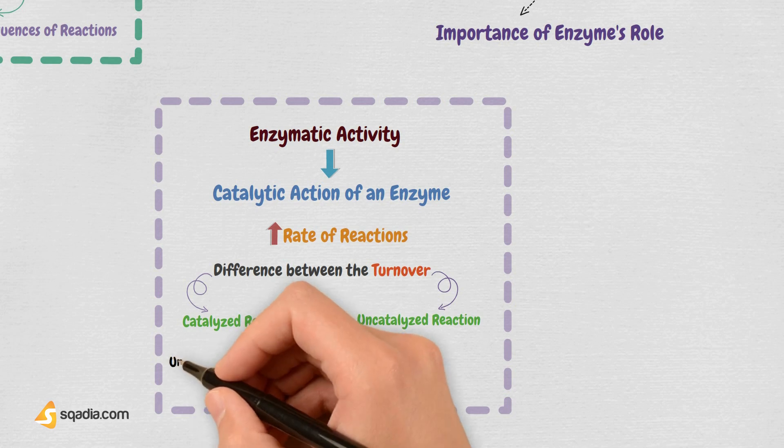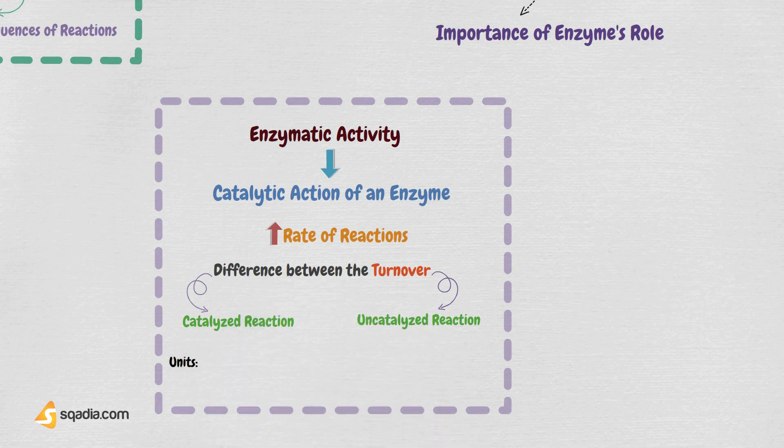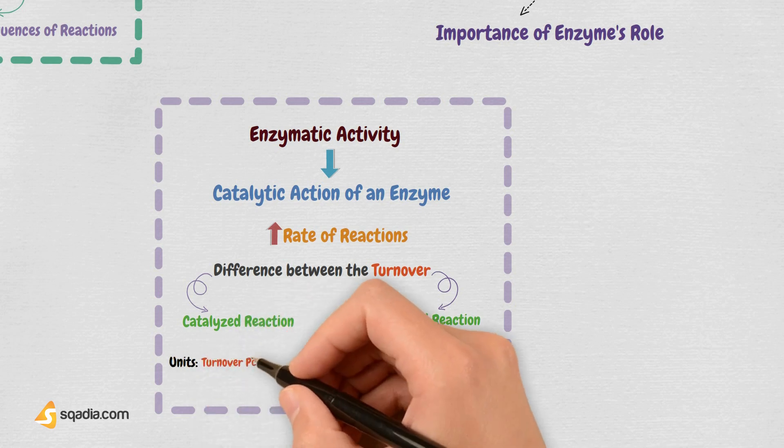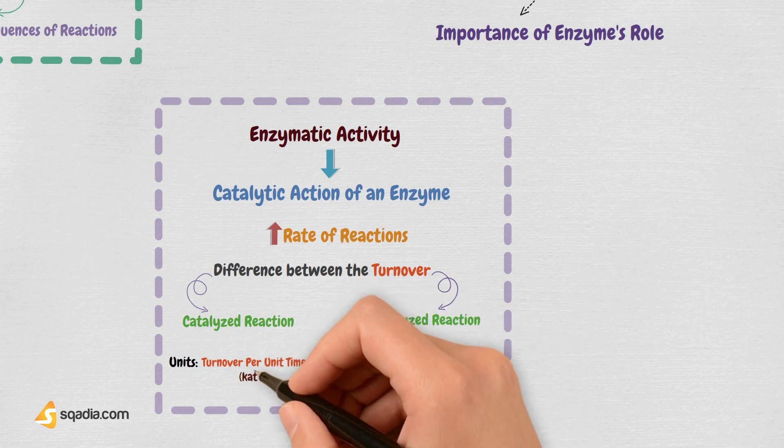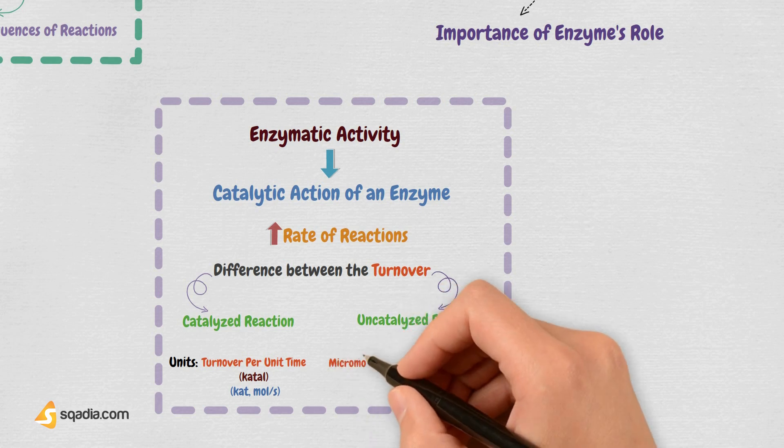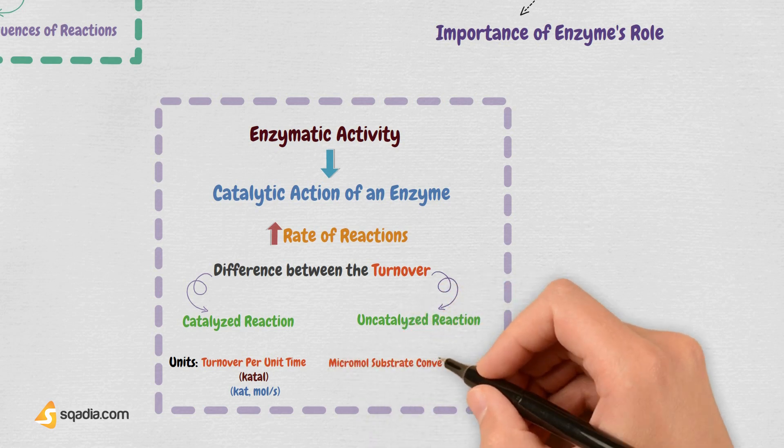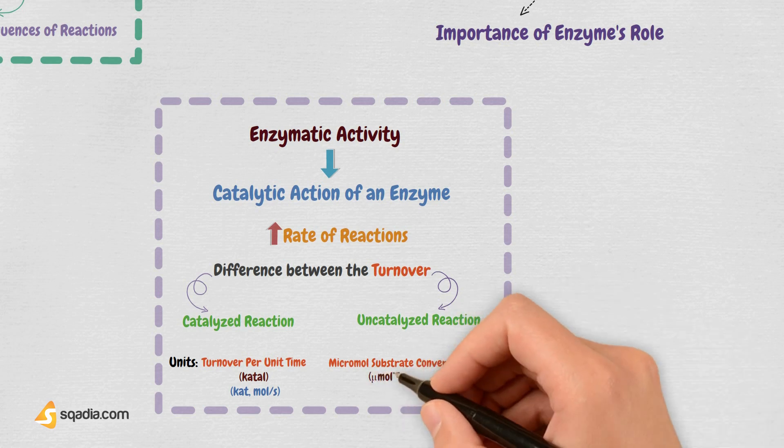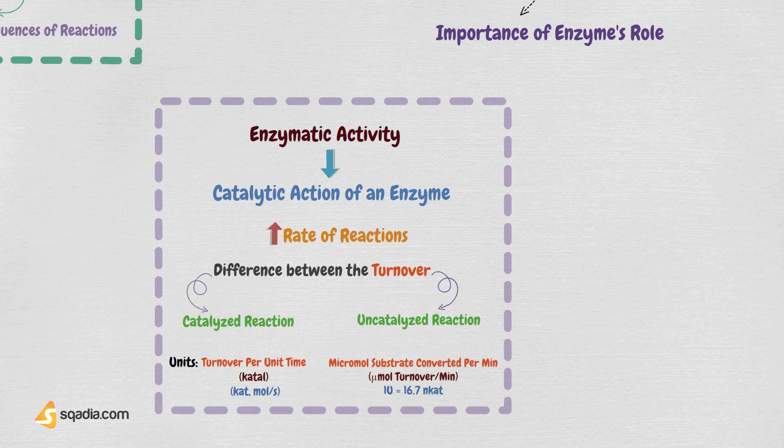The unit used for enzymes is usually turnover per unit time, expressed in catal or kat, mole per second. Now enzyme units are expressed as micromole substrate converted per minute, micromole turnover per minute, and 1U is equal to 16.7 nanokatals.